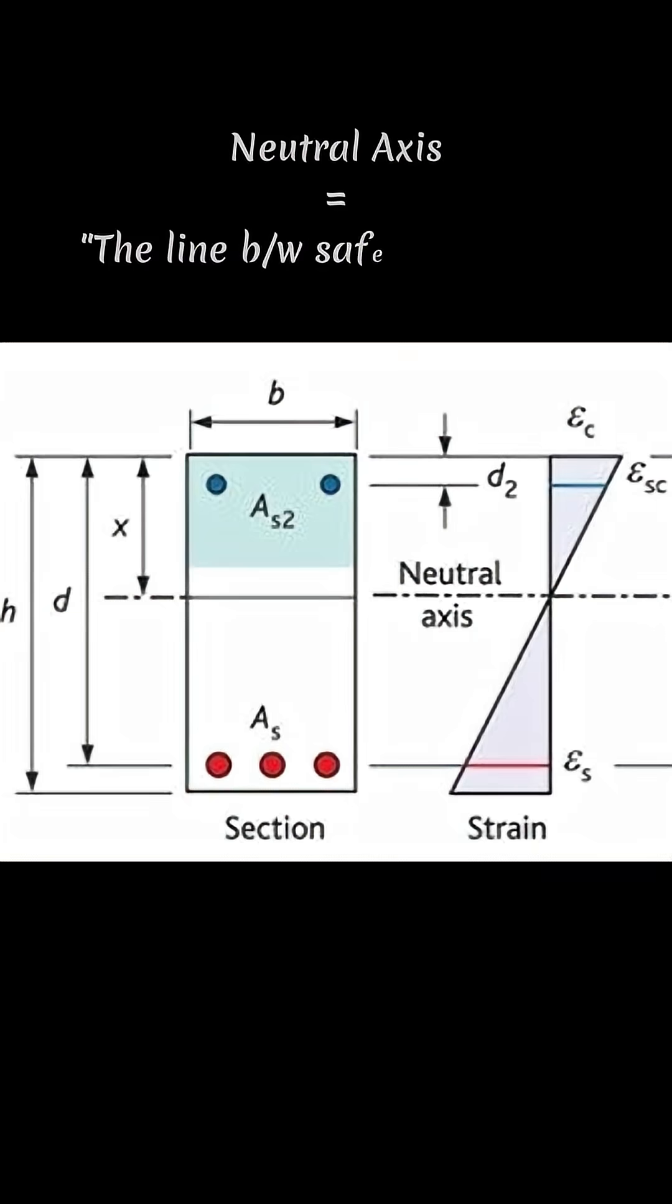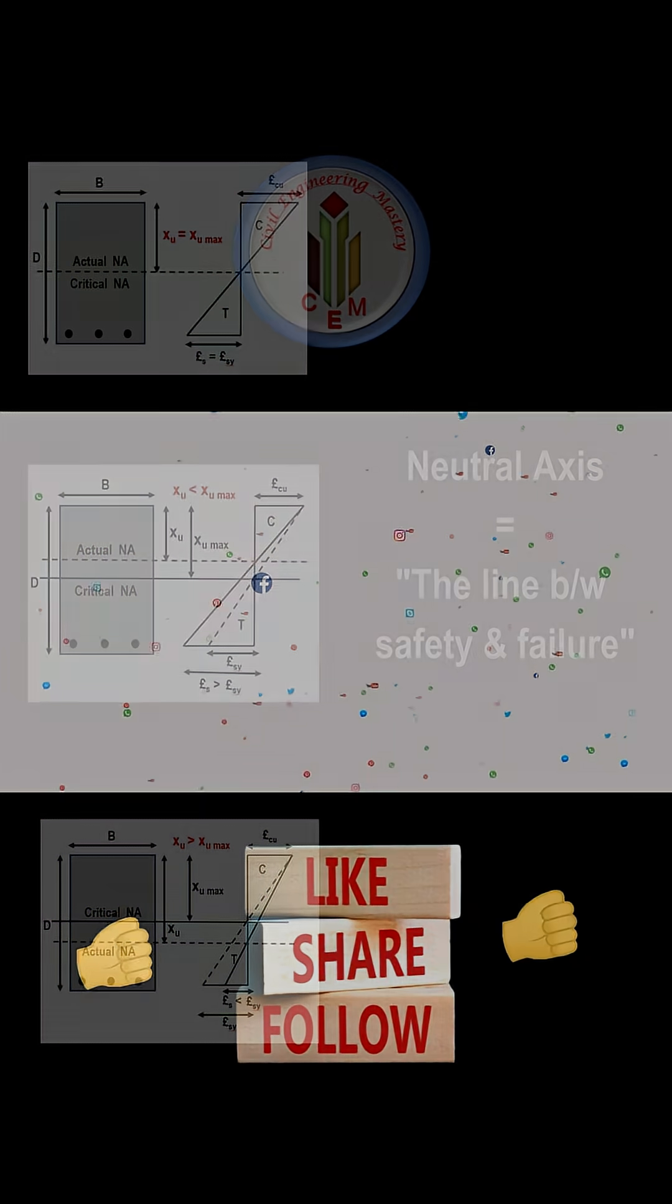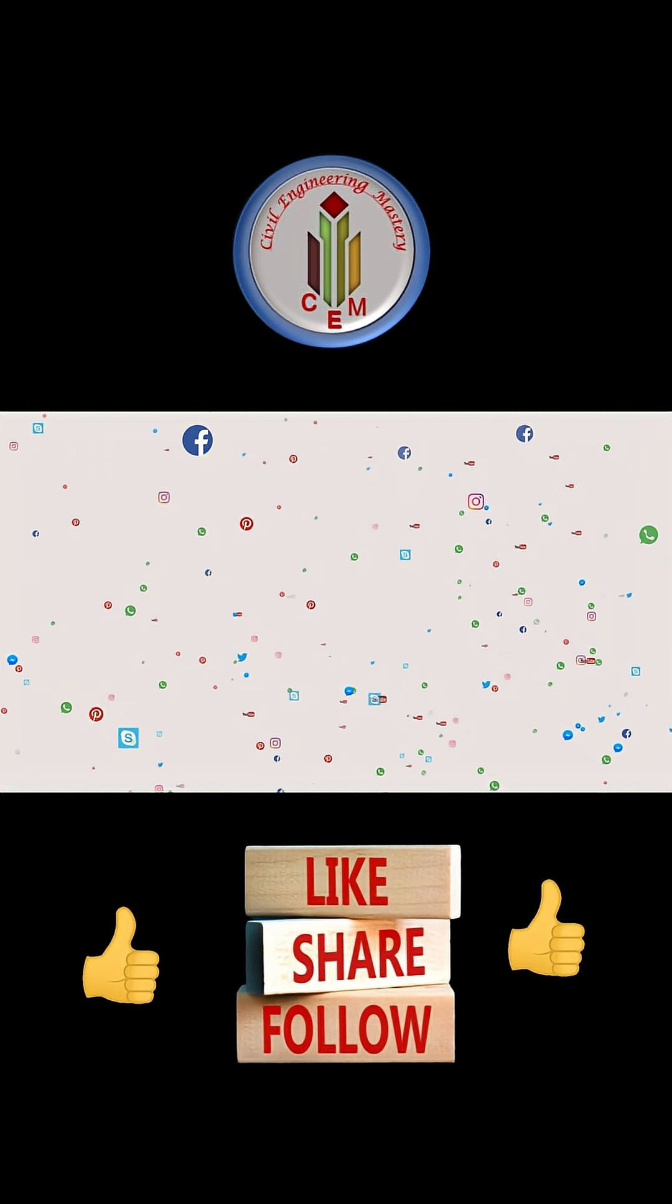The neutral axis line moves between all three beam types. So next time when you design a beam, watch where your neutral axis lies. It decides whether your design bends or breaks. Follow, like, and share for more civil engineering insights.